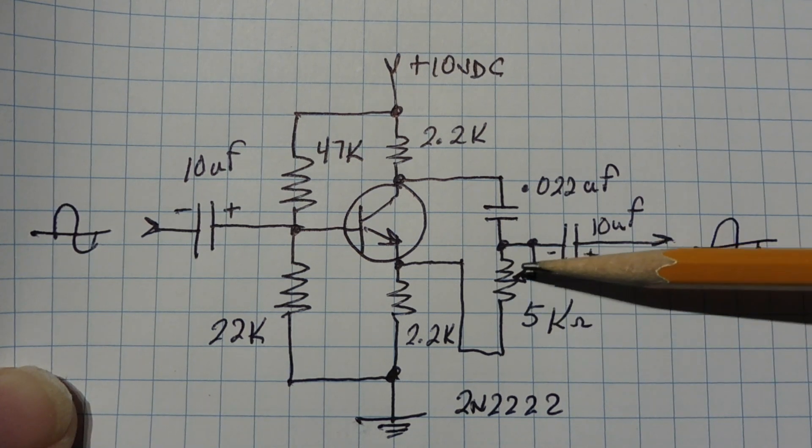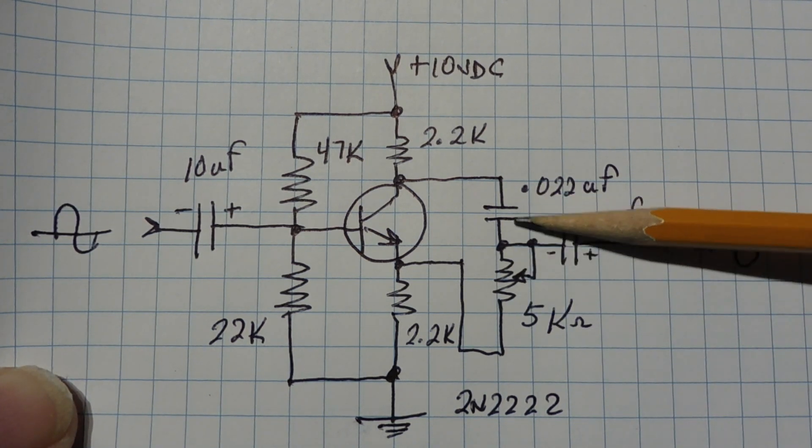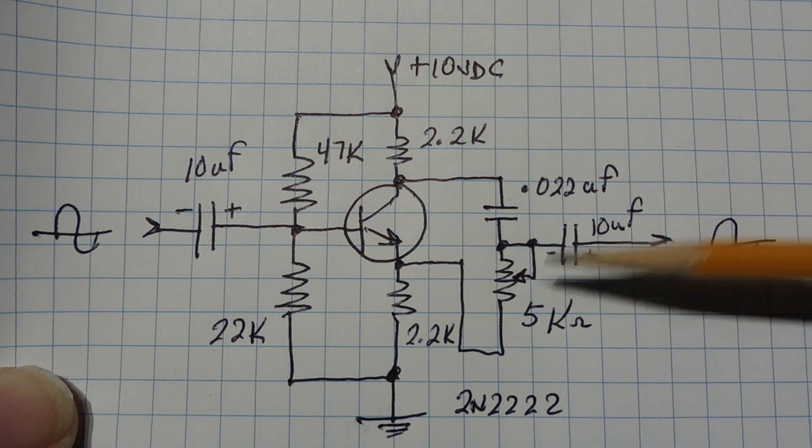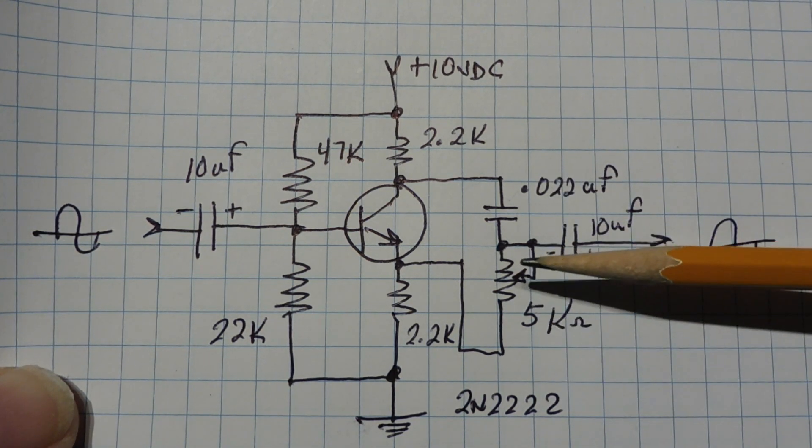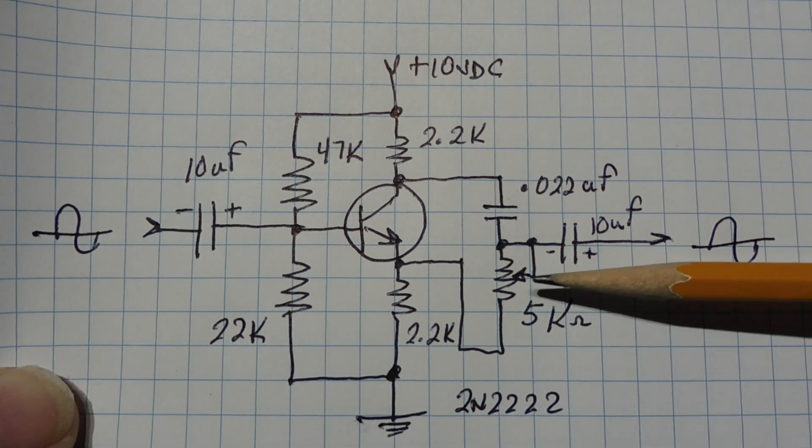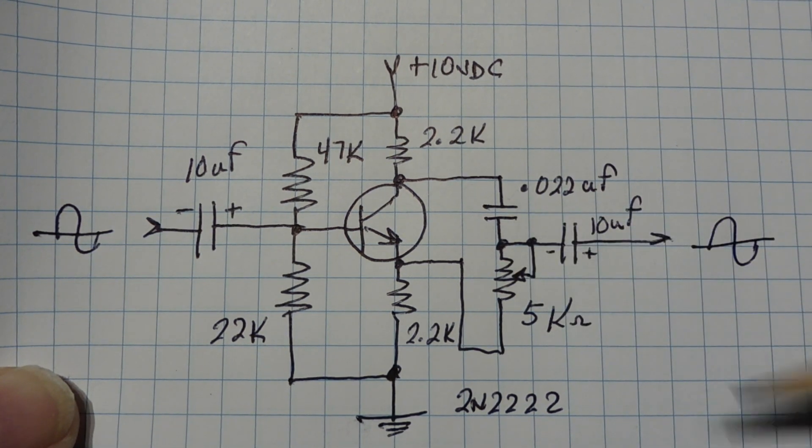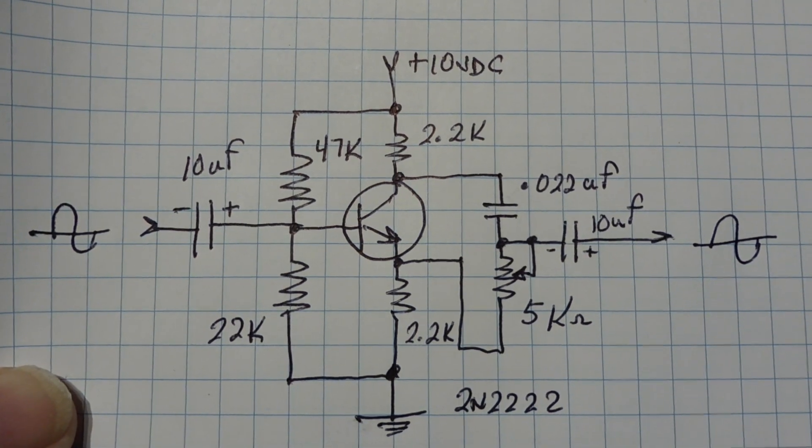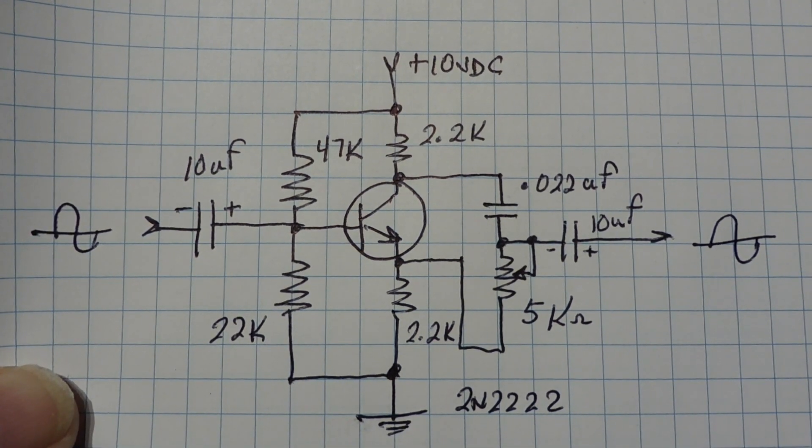This RC network is frequency dependent. So the higher frequency you go, you'll have to change these components to match the frequency band that you're going to be working in. We could change this 5K pot out for a digital IC pot, and we could actually control the circuit using a microcontroller like Arduino Nano. That's the circuit there. It's pretty simple if you want to build yourself your own phase shifter.